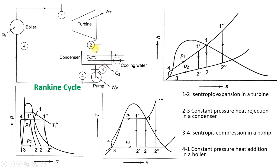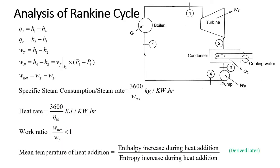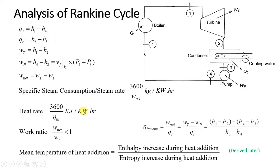Process 2 to 3 is constant pressure heat rejection in the condenser. Process 3 to 4 is isentropic compression — the pumping action. And 4 to 1 is constant pressure heat addition in the boiler. We have seen the PV diagram, TH diagram, and HS diagram for this. We have done the analysis and seen all equations related to the Rankine cycle: heat supplied, heat rejected, work developed by the turbine, and work consumed by the pump. Everything depends on change in enthalpy, with units of kJ/kg. We have also seen the efficiency formula.